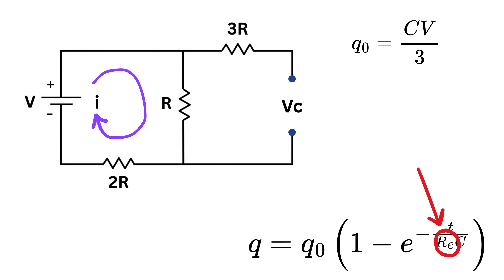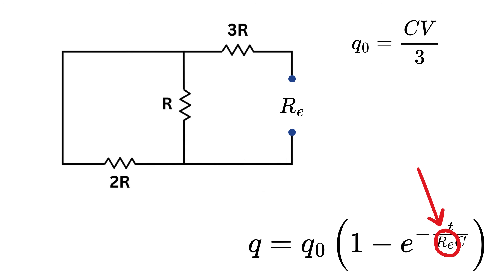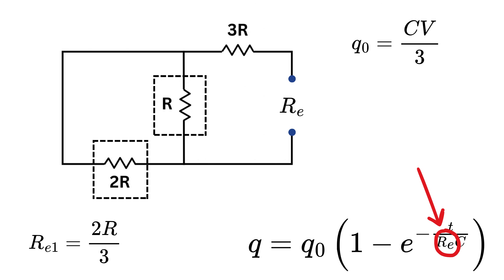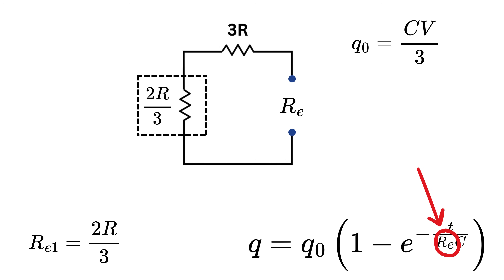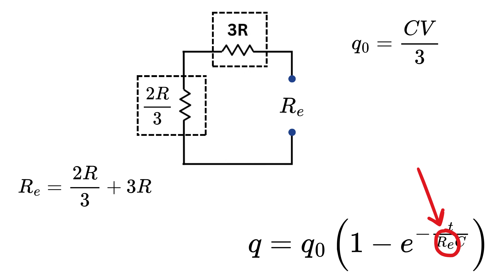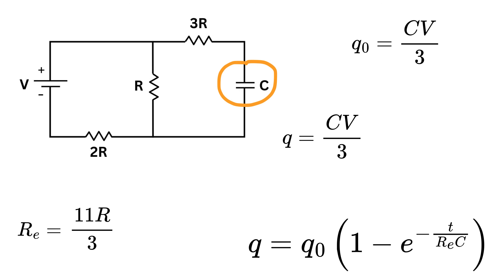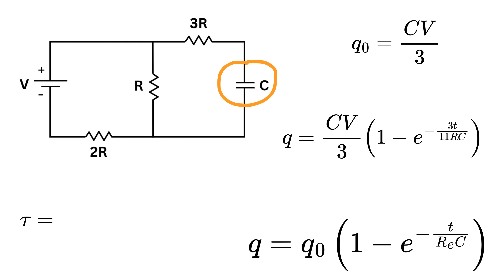Next, calculate R-equivalent as seen by the capacitor. Remove the battery and replace it with a wire, then solve for R-equivalent across the two terminals. Both resistors R and 2R are in parallel, giving R times 2R divided by R plus 2R, which equals 2R by 3. This 2R by 3 is in series with 3R, so the total equivalent is 2R by 3 plus 3R, which equals 11R by 3. Therefore, the charge across this capacitor is CV over 3 times one minus E raised to minus 3T over 11RC, and the time constant is 11RC by 3.